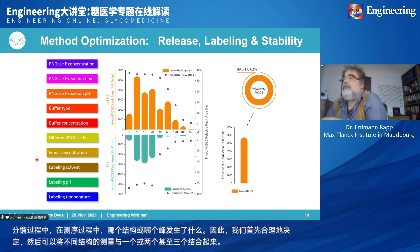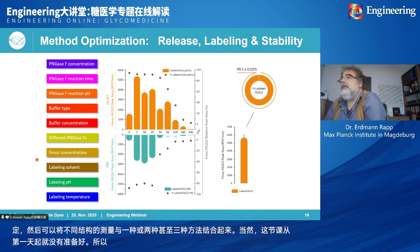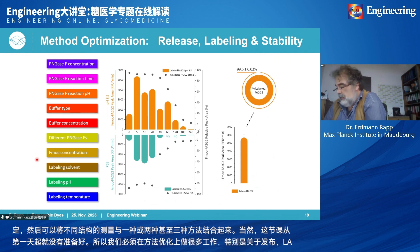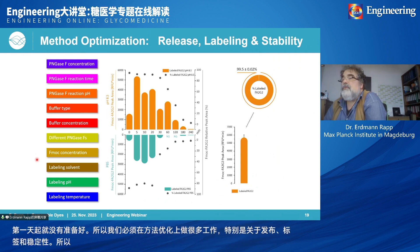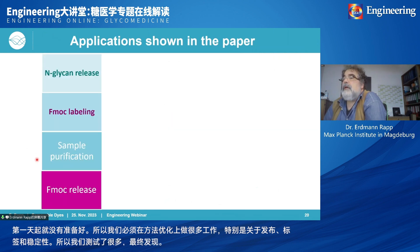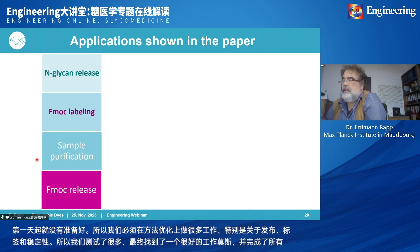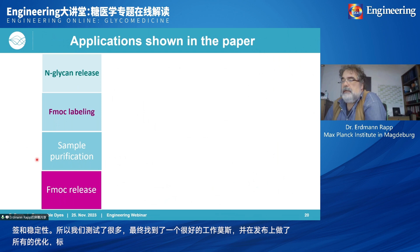Of course this method was not ready from the very first day. We had to do a lot of work on method optimization, especially regarding release, labeling, and stability. We tested quite a lot, finally found a good working mode. Having done all the optimization on release, labeling, sample purification, and release of the removable dye, we showed some applications of the method in this paper.